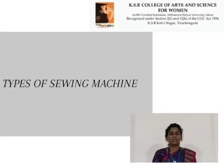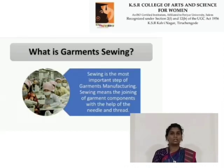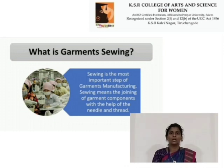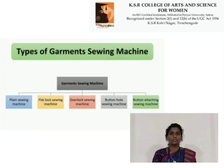Now, we are discussing about types of sewing machines. Sewing is the most important step of garment manufacturing. Sewing means the joining of garment components with the help of the needle and thread.